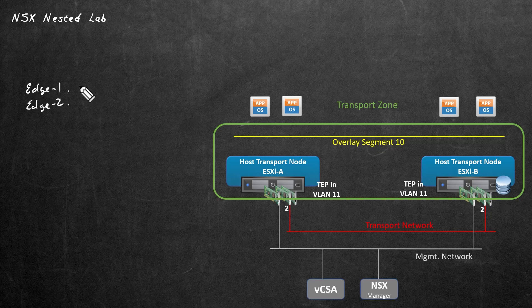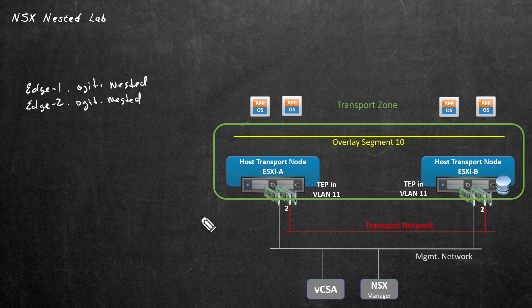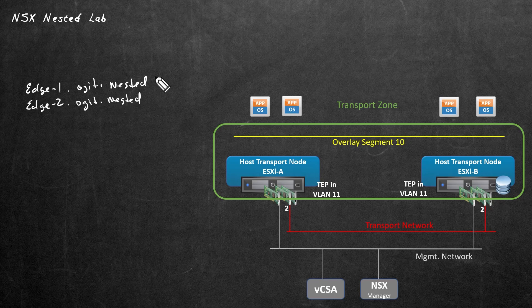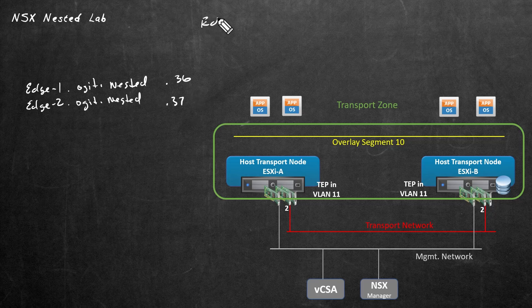It's going to ask us for a fully qualified domain name, so we'll use edge1.ogat.nested and edge2.ogat.nested. Up to this point in this video series, we're going to avoid setting up our own DNS internally in the nested lab environment, because that's one additional step that if it goes wrong can cause the whole enterprise to not work. So we'll specify these FQDNs but skip setting up DNS records, to avoid having to configure the NSX manager and other components to use a different DNS server.